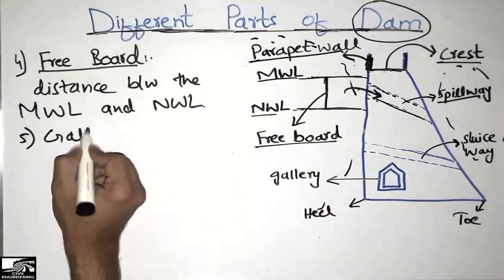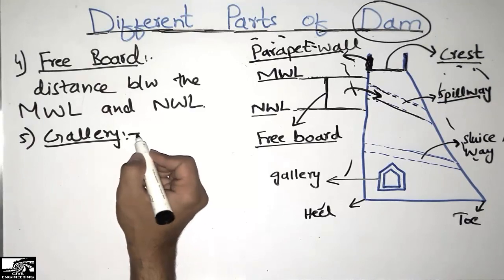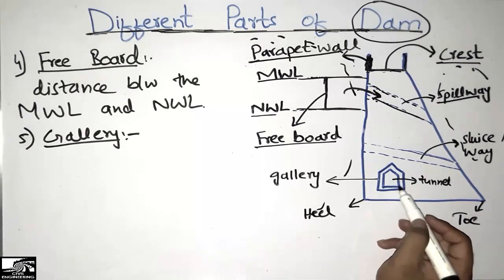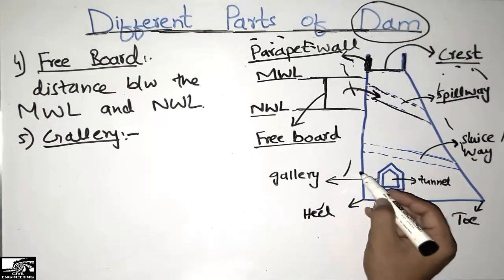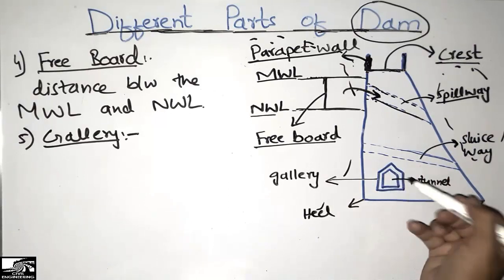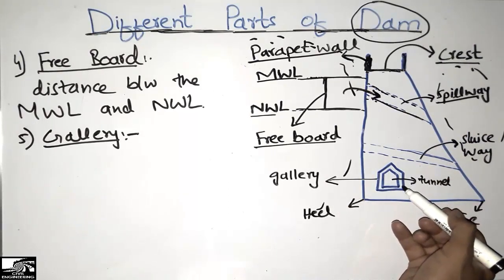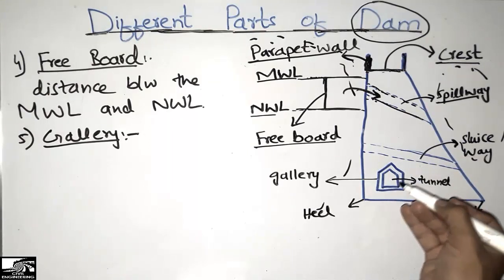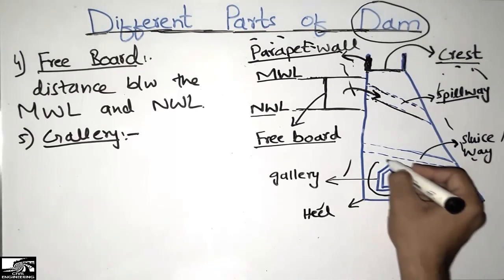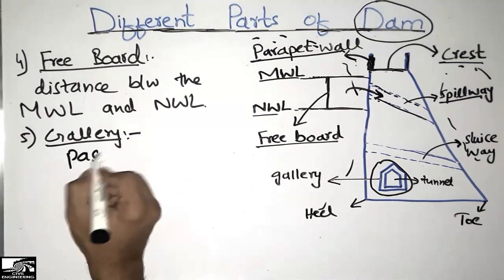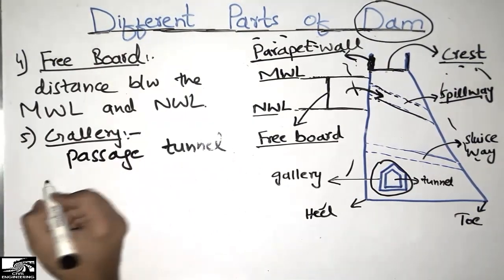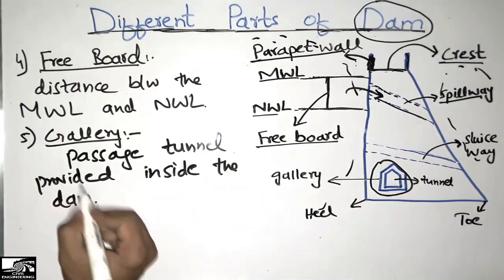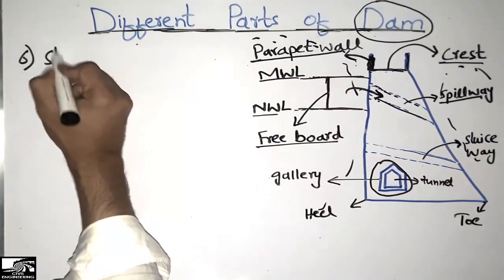The fifth part of the dam is the gallery. The gallery is a small tunnel-like passage provided inside the dam for different purposes. It may be provided in the longitudinal or transverse direction, used for storage of equipment to determine the performance of the dam, and as a small space for personnel to inspect and monitor dam specifications.